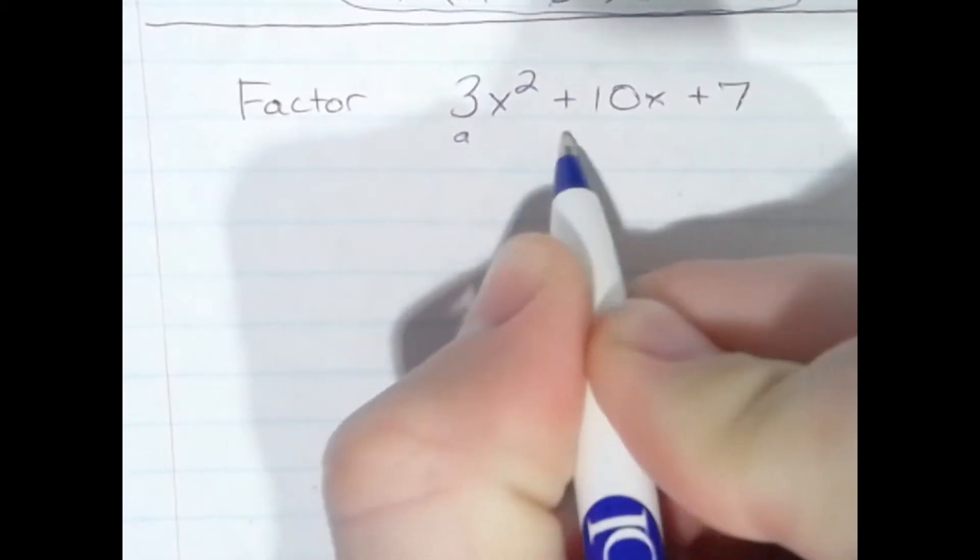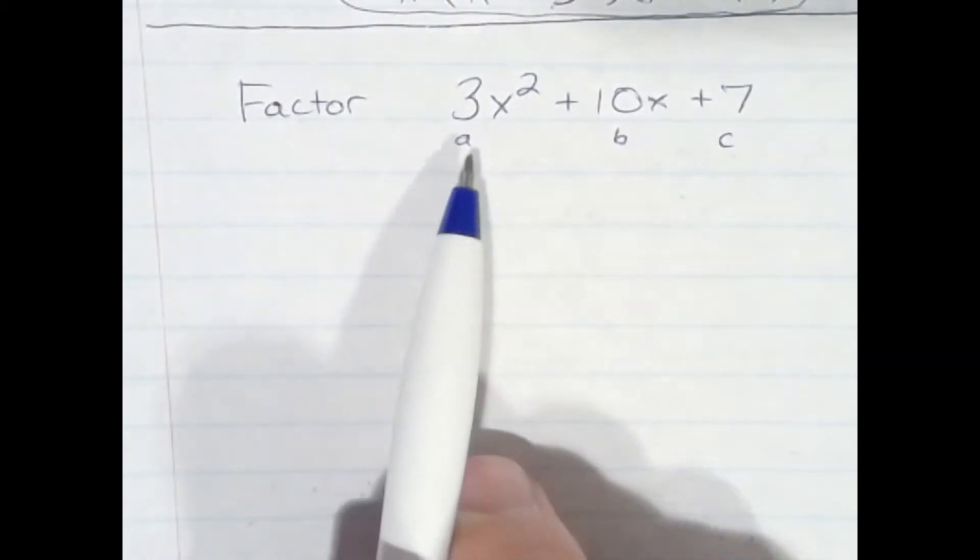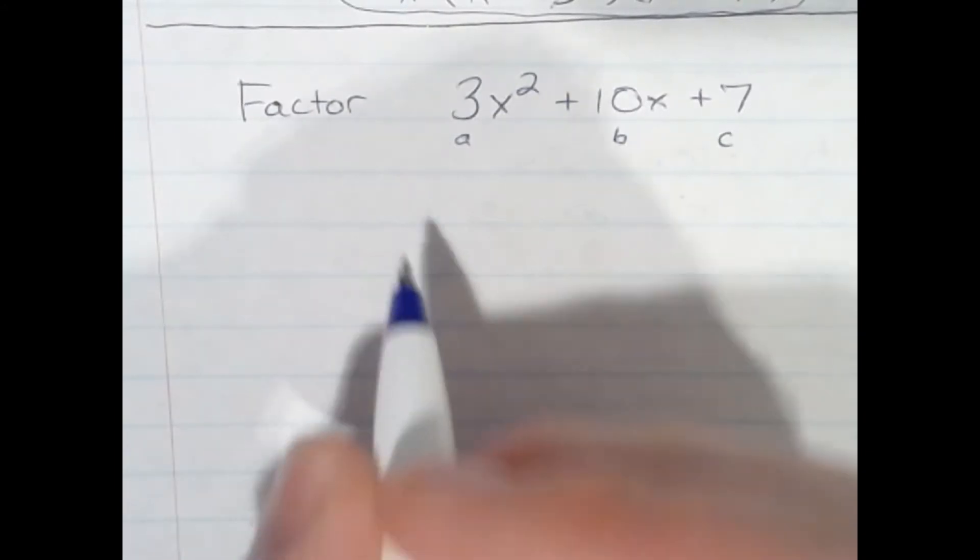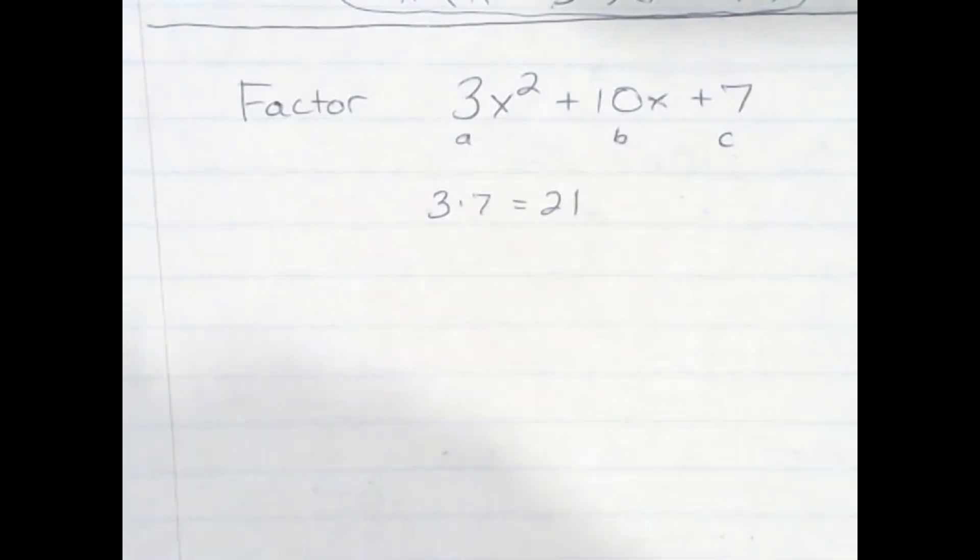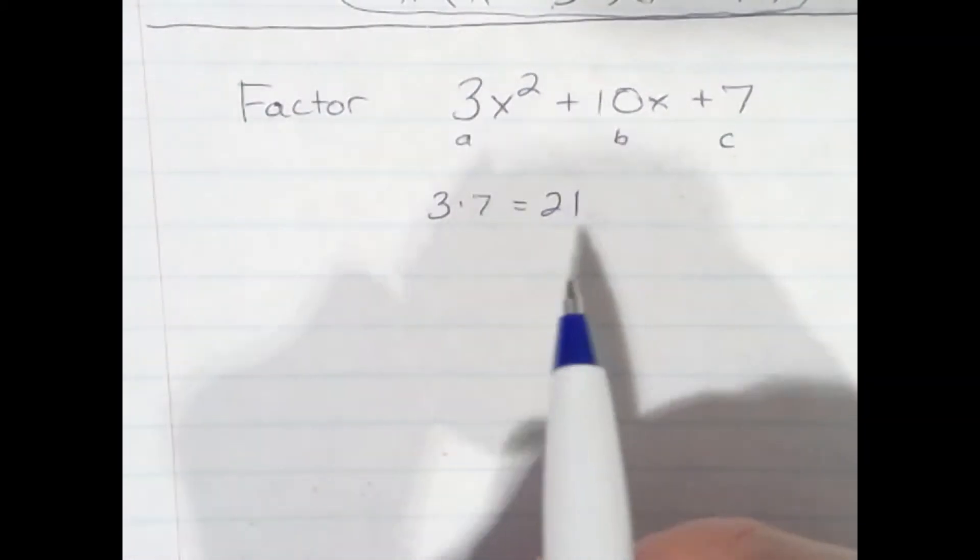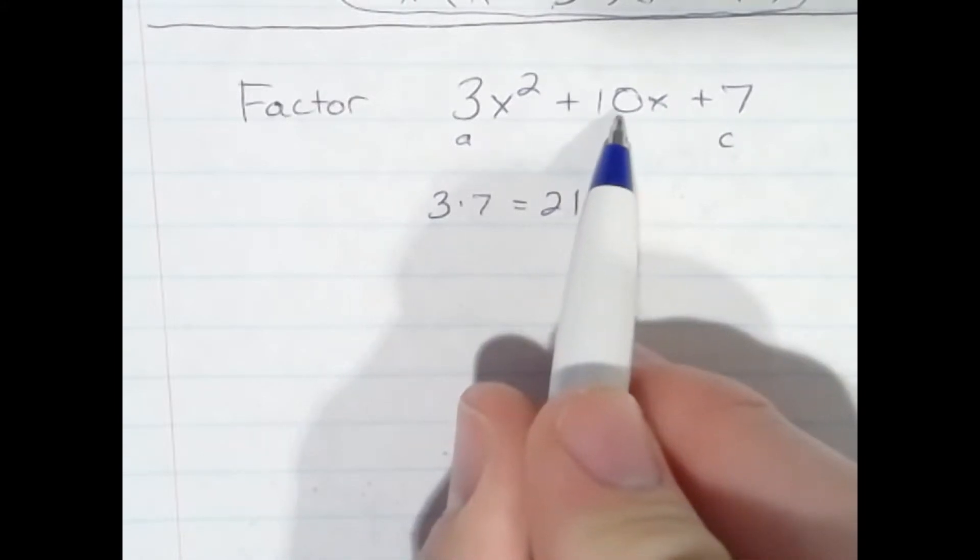So I'm going to call this the AC method, because you start out by multiplying A and C. 3 times 7 gives us 21. And then we're asking ourselves, what factors of this product, 21, add up to the B number, 10?